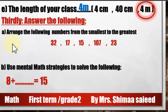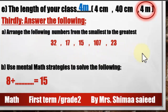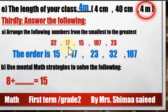Arrange the following numbers from smallest to greatest — that means arrange them in ascending order. The smallest number is 15; 15 is less than 17, less than 23, less than 32, and less than 107. So the smallest is 15 and the greatest is 107.